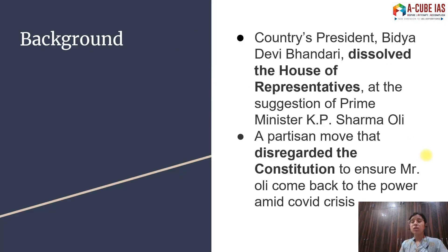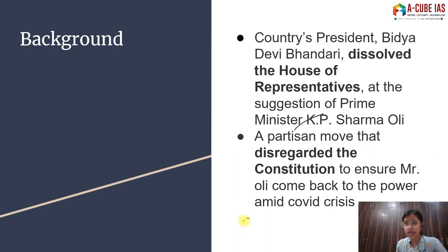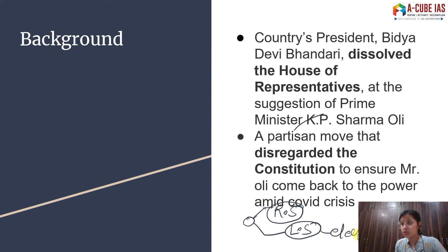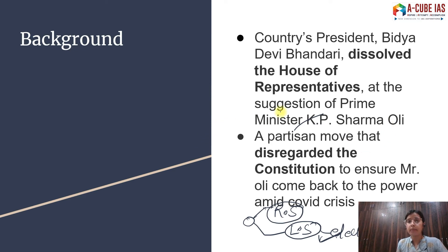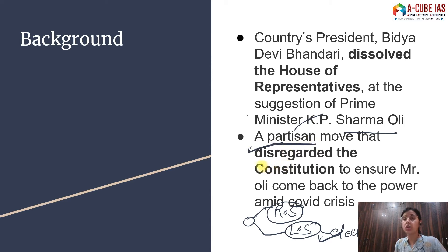Moving ahead, the next article is about what is happening in Nepal. Nepal's President Bhandari has dissolved the House of Representatives — which is like a Lok Sabha, the lower house where members come by election, as opposed to the upper house like India's Rajya Sabha. In Nepal, the lower house was dissolved by the President on the advice of the Prime Minister. The article says it is a very partisan move that does not regard the constitution.